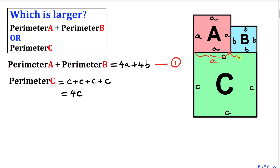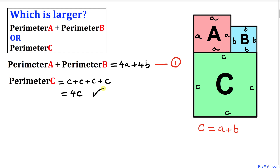Now let's observe one key thing: the side length of square A is lowercase a, and the side length of square B is b, so the total length of that combined side equals c. That means c equals a plus b. Substituting into our perimeter expression: 4c becomes 4 times (a plus b), which distributes to give us 4a plus 4b. Let me call this Equation 2.